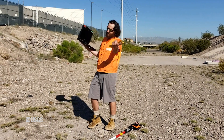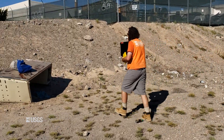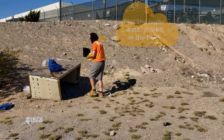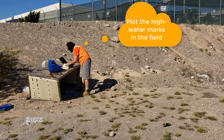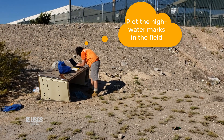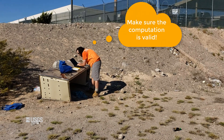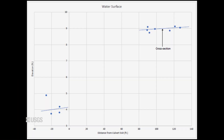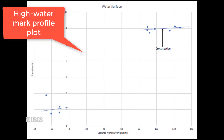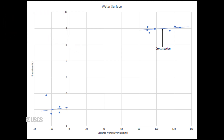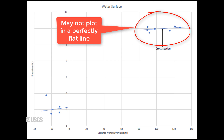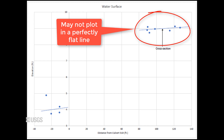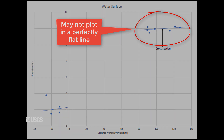Once the high watermarks have been surveyed, take a break and plot the high watermarks in the field. It can be tempting to skip this step, but if the high watermarks indicate, for example, that there was a drop associated with a riffle upstream of the culvert, the computation won't be valid and doing the entire survey will be useless. You can use software like Excel, SACUI, or iRIC to create a high watermark plot. The high watermarks will likely not plot in a perfectly flat line, especially if there are many poor marks. There may be considerable spread, but they should indicate a mostly flat and uniform water surface without large changes in slope, except associated with the culvert.